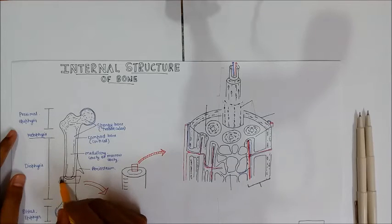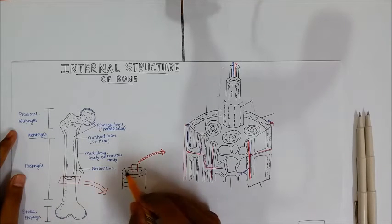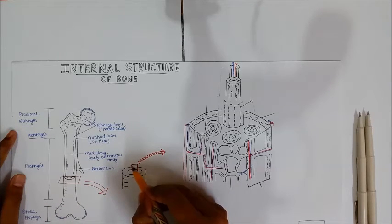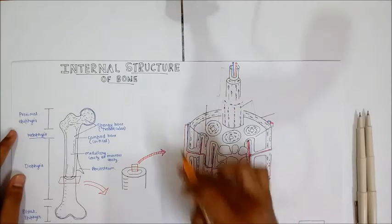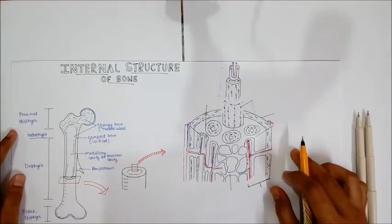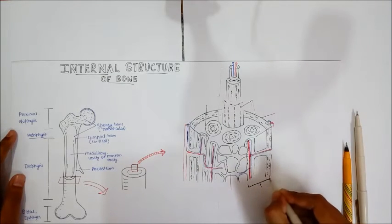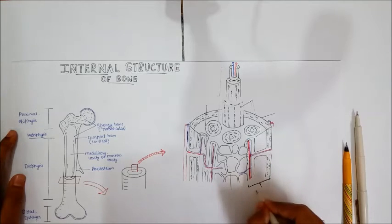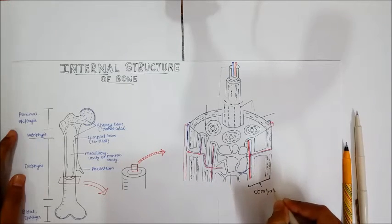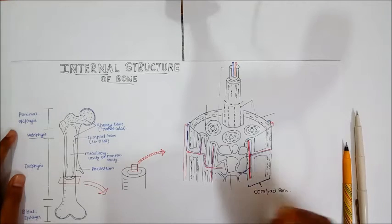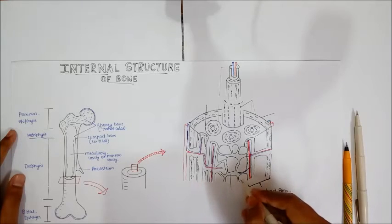Now let's take a cross section of this long bone — this is how it will appear. When we zoom into the region of compact bone and spongy bone, you can see the outer bone called the compact bone or cortical bone.